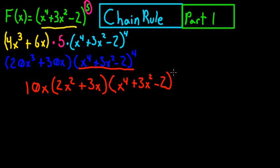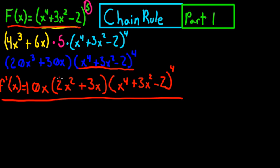And so the derivative of this function, how you're going to write that is f prime of x equals 10x times 2x squared plus 3x times x to the fourth plus 3x squared minus 2, all to the fourth power. And that is how you find the derivative of this function right here.